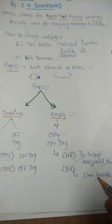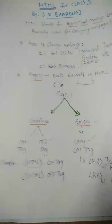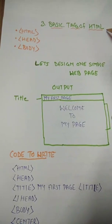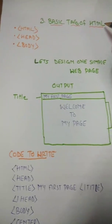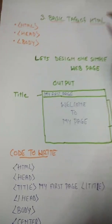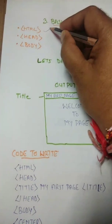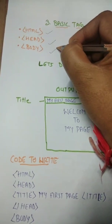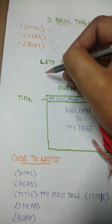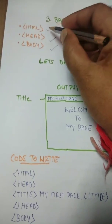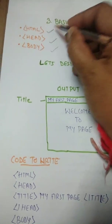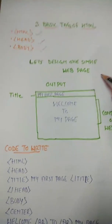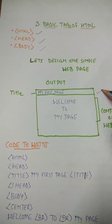There are three basic tags of HTML. All other tags will come inside the body tag. Your first basic tag is HTML itself, the second is the head tag, and the third is the body tag. All content tags come inside the body tag. The head tag defines the head of the page, and the HTML tag indicates that you are going to design an HTML page.